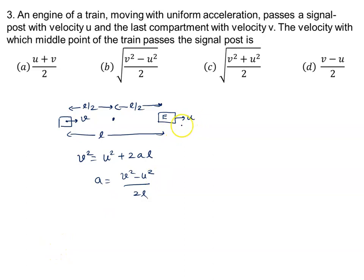We will apply the formula v² = u² + 2as, so v² = u² + 2 into acceleration (v² - u²)/(2l) that we have already calculated here, and distance is given by l/2. So we cancel 2.